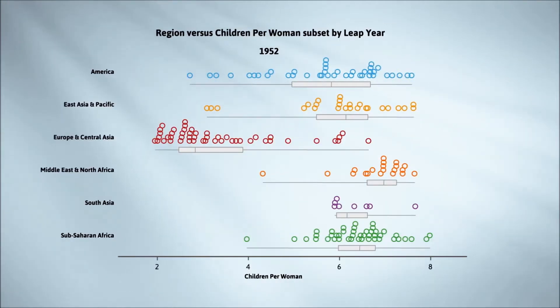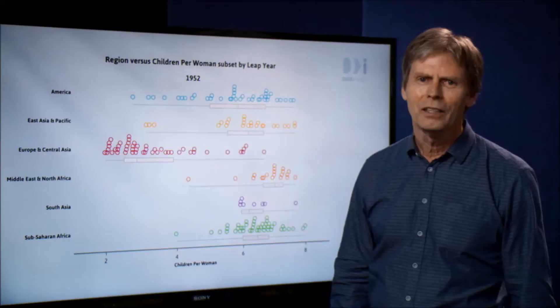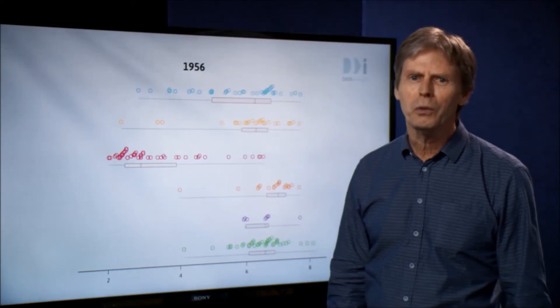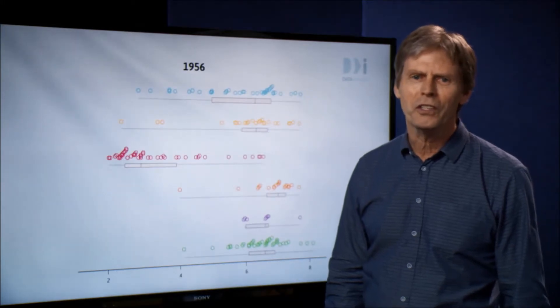The earliest year we have in this data set is 1952. Back then, all regions except Europe and Central Asia were centered at above six children per woman, with Europe and Central Asia centered down at just under three. Now we'll watch the world change over time.